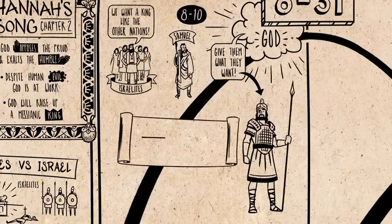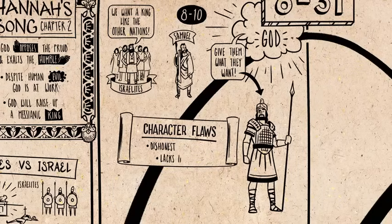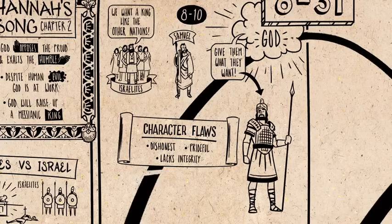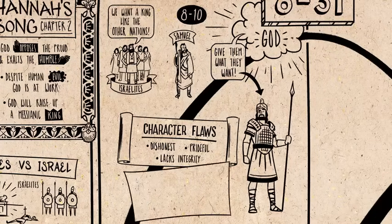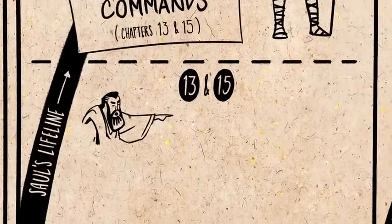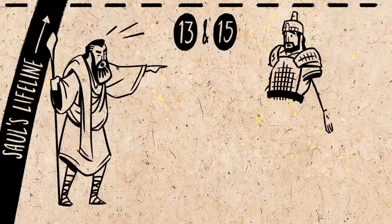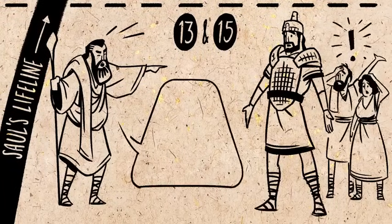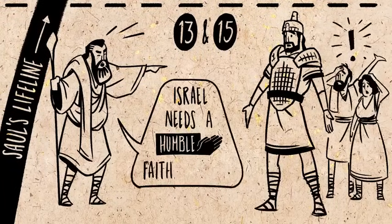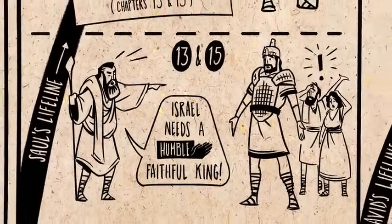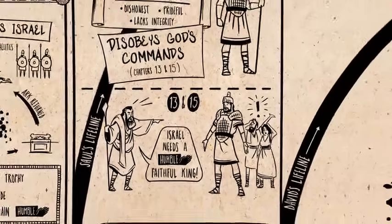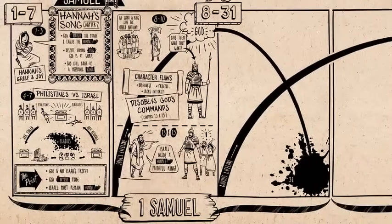But Saul has deep character flaws. He's dishonest, he lacks integrity, and he seems incapable of acknowledging his own mistakes. These flaws become his downfall. He wins some battles at the beginning, but his flaws run so deep that he eventually disqualifies himself by blatantly disobeying God's commands. The aging Samuel confronts Saul and Israel — he had warned the people that they would only benefit from a king who is humble and faithful to God, otherwise the kings of Israel will bring ruin. So he informs Saul that God is going to raise up a new king to replace him.